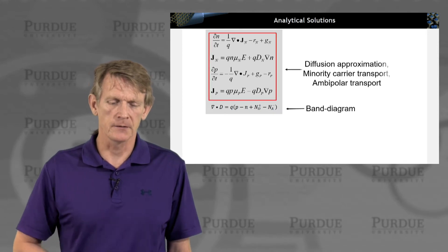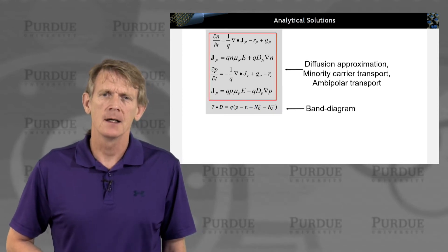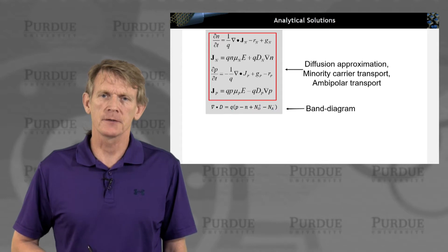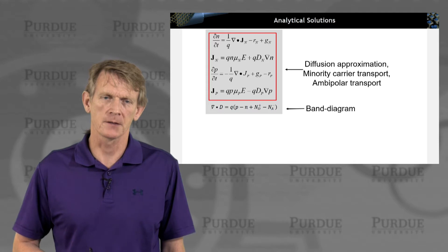Again, band diagrams come out of the Poisson equation. And we'll talk about drift-diffusion approximations for minority carrier transport, and we'll talk about ambipolar transport as well.